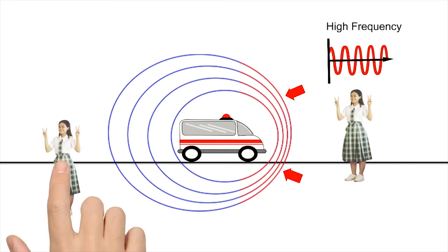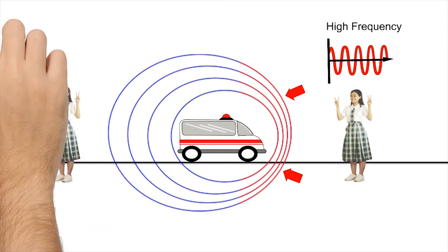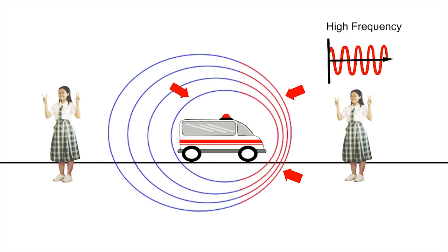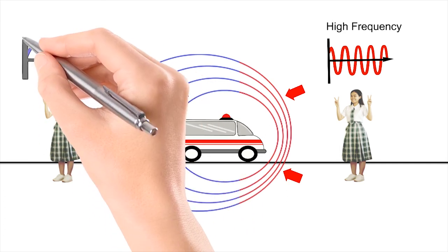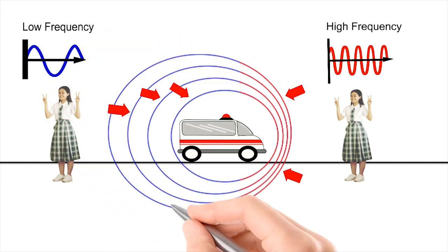When the ambulance is getting away and you are behind it, the sound waves behind are stretched out relative to the motion of the vehicle. That means longer wavelength behind the vehicle and a lower frequency or pitch is observed by you.